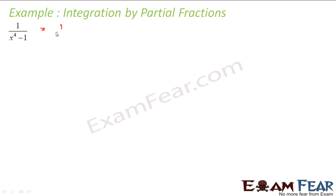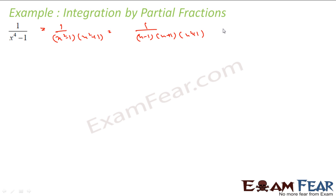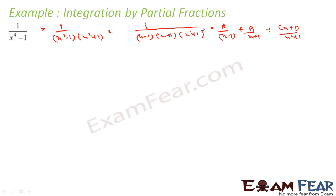First we can just factorize this. This becomes x squared minus 1 into x squared plus 1. Further factorizing, this becomes 1 by (x minus 1) into (x plus 1) into (x squared plus 1). Why? Because x squared plus 1 is not further factorizable.